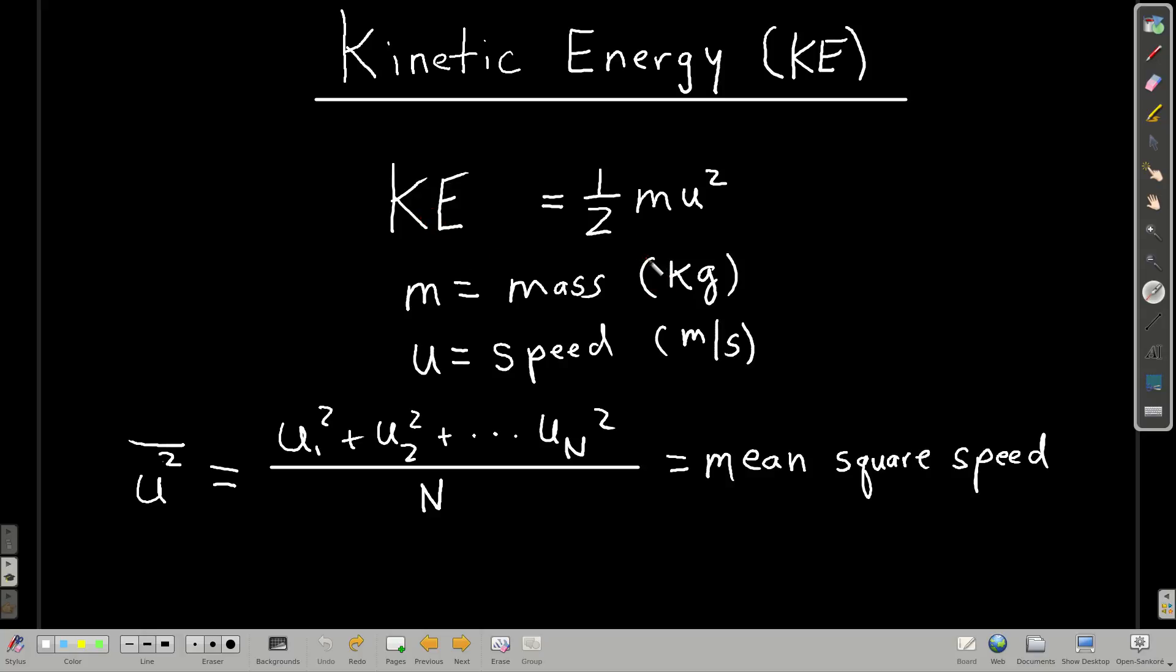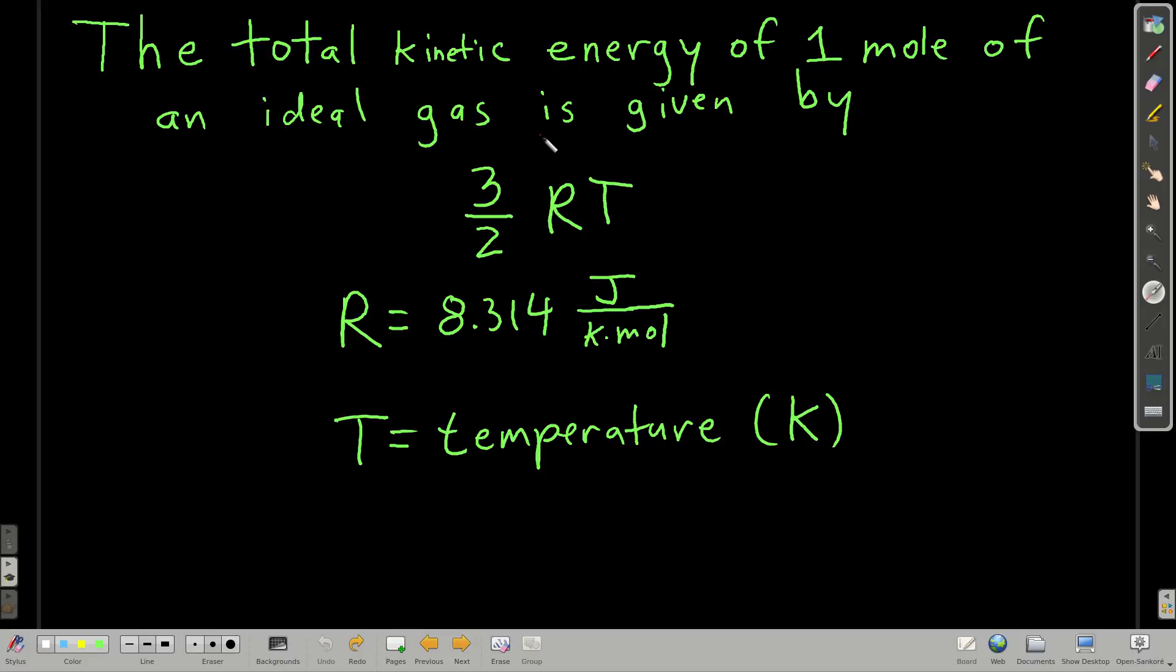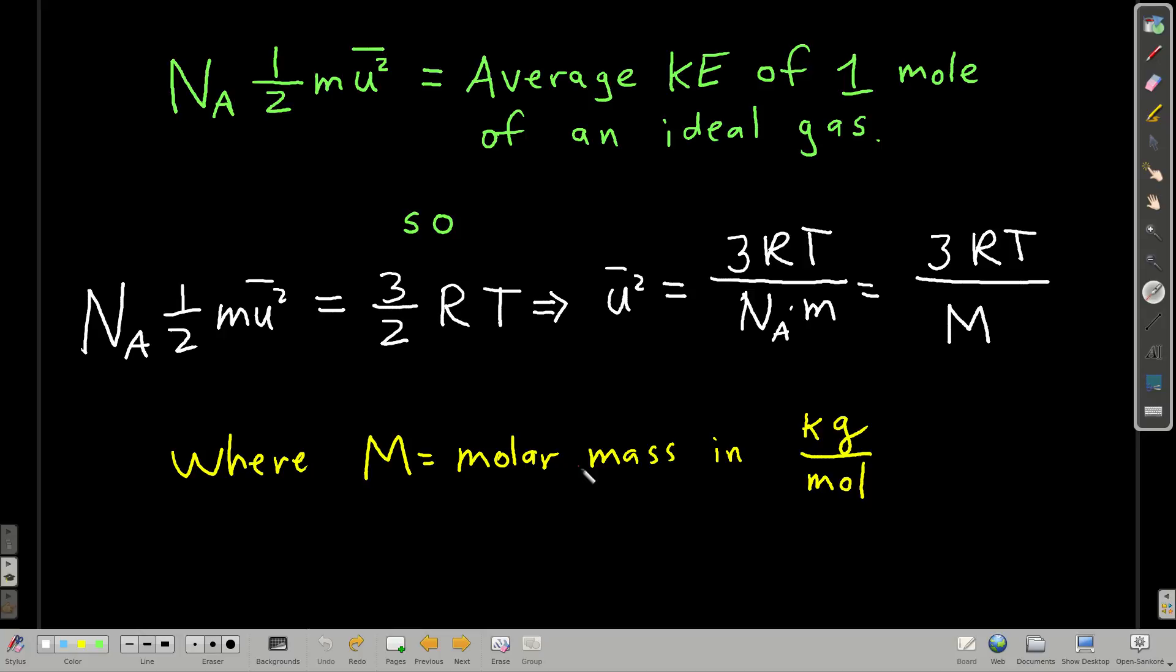Because if we have a gas and it's all the same particles, say all helium, they all have the same mass, more or less, but there's this distribution of speeds so they can have different kinetic energies. What we're going to talk about is the average kinetic energy. So we're going to use the mean square speed when we do this, speed squared. Now here, it can be shown that, we don't show it in this course, that for an ideal gas, one mole of an ideal gas, the total kinetic energy is 3 halves RT. Pretty simple formula, right, but really nice. Here, R is 8.314 joules per kelvin mole, you should memorize that, and T is a temperature, and remember that it has to be in kelvin, so if it's in Celsius, add 273.15 to it.